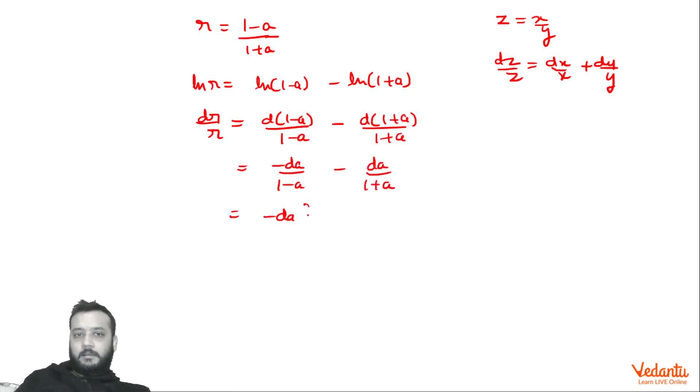Taking minus da common, we get 1 upon (1-a) plus 1 upon (1+a). So we are getting 2 upon (1 minus a²), which gives us 2 upon (1+a)². Hence we get minus 2da upon (1+a)².